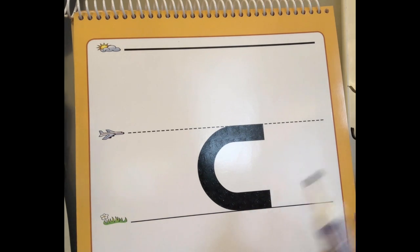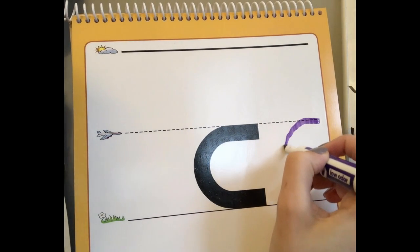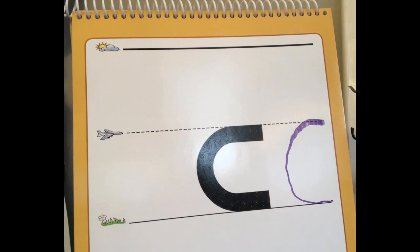Right, let's try it. So we're gonna start on the plain line, start to fly backwards, and go down and around to the grass line. C, cat, k.